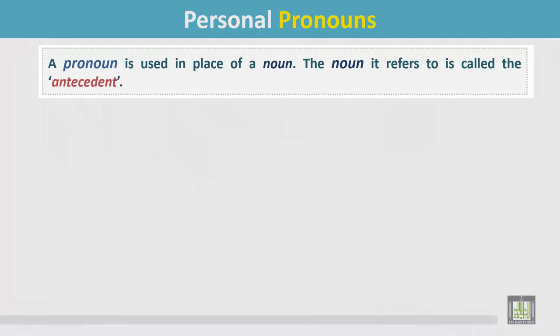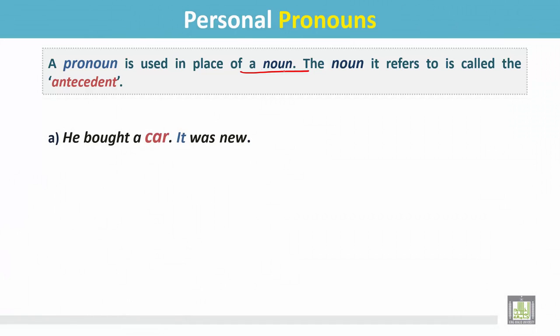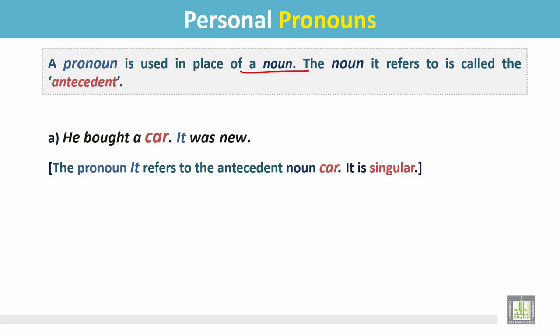A pronoun is used in place of a noun. The noun it refers to is called the antecedent. In this example: 'He bought a car. It was new.' The pronoun 'it' refers to the antecedent noun 'car.' It is singular.